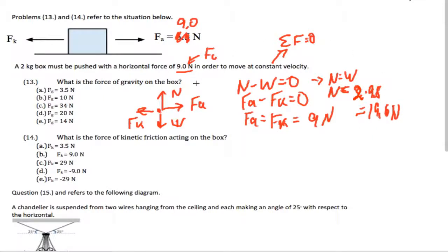So basically what I've done is I've solved for every single force in this problem. I know that the weight is 19.6. I know that the normal has to balance that, and those are Newtons. I know that the applied force is 9 Newtons, and I know that the friction force is 9 Newtons.